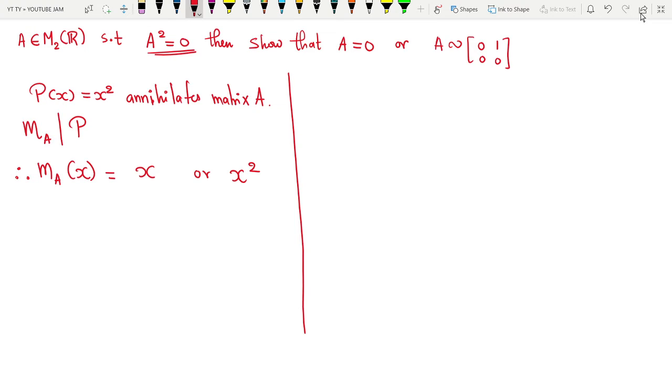We are going to create two cases. If m_A(x) = x, then m_A(A) must be 0 because the minimal polynomial annihilates. On the place of x I'll write A, so A = 0. Hence the first part is proved: A could be a zero matrix. In case 1 we got the first thing.